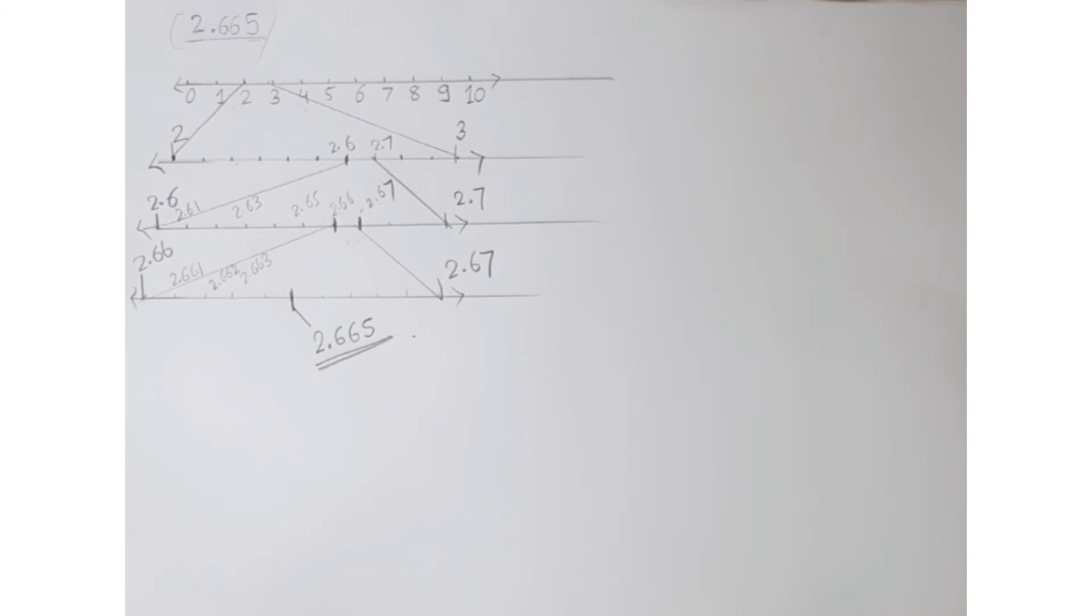So this is for today's video and we have learnt about the process of successive magnification. In our next video we will see example 11 in which we will represent one more number on the number line using the same method. Hope you understand this concept. If you are new on my channel then do like, share, comment and subscribe to my YouTube channel for more such videos. And a very big thank you for watching my video.